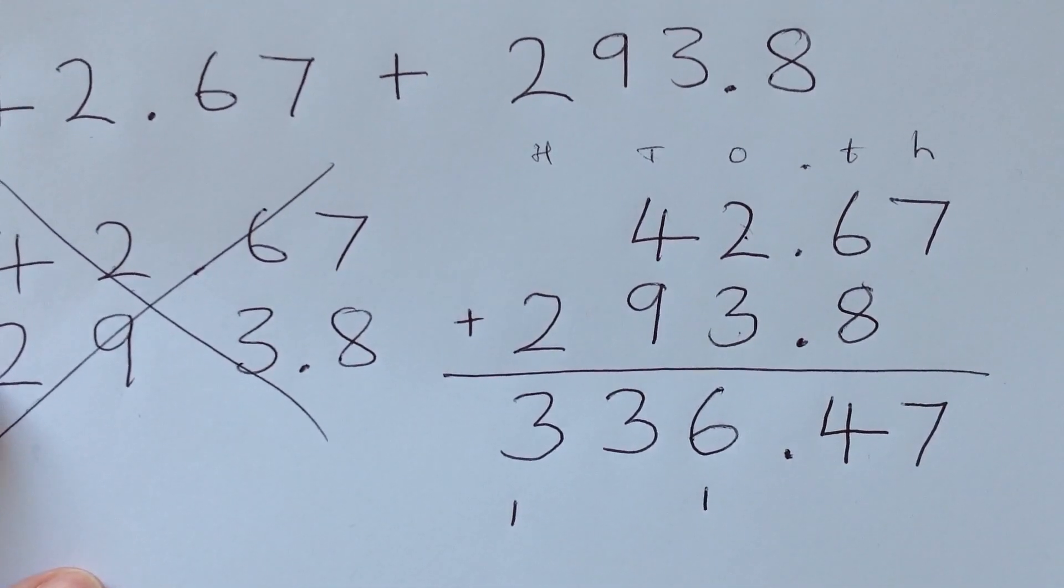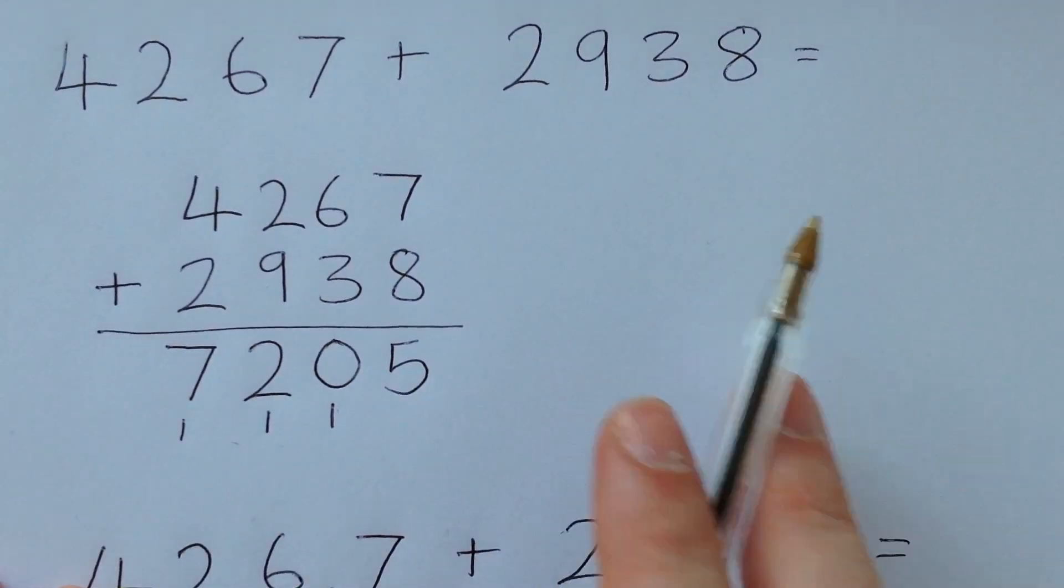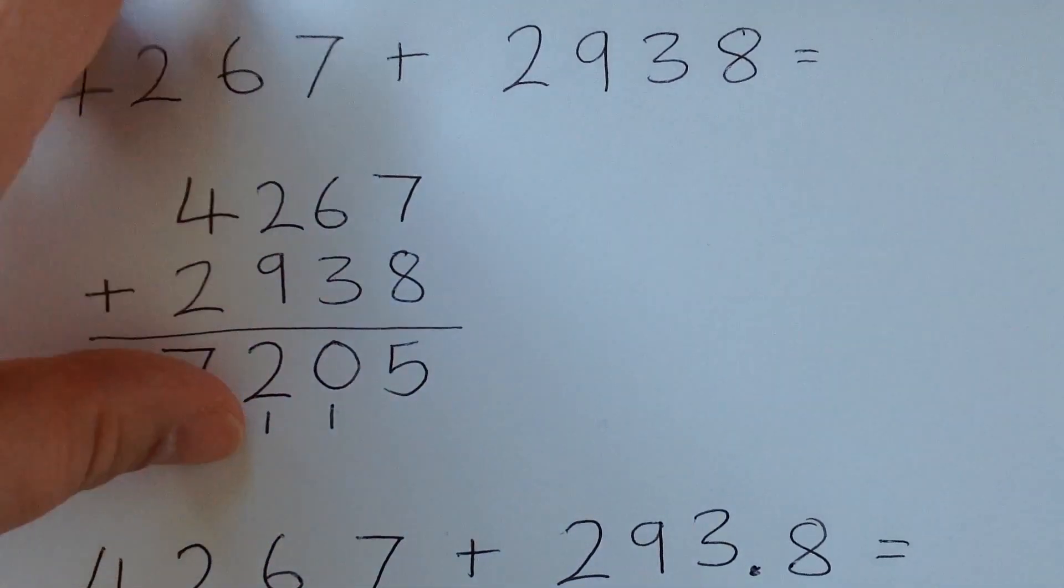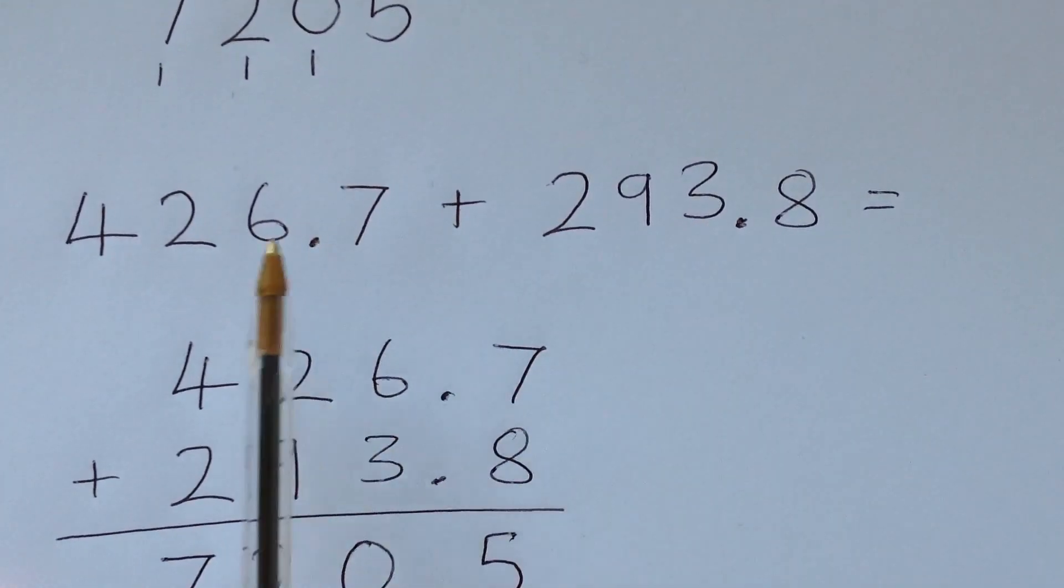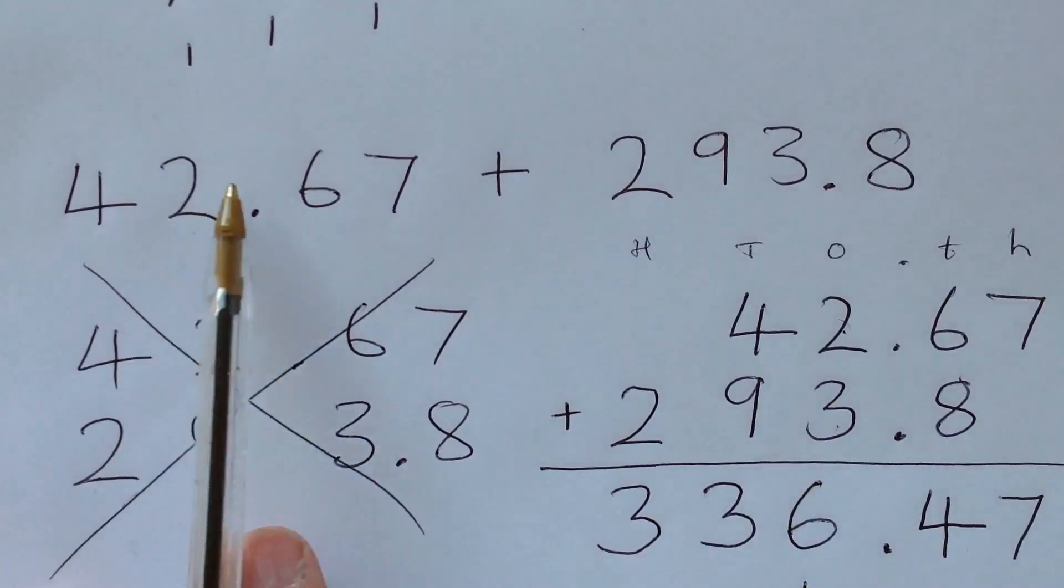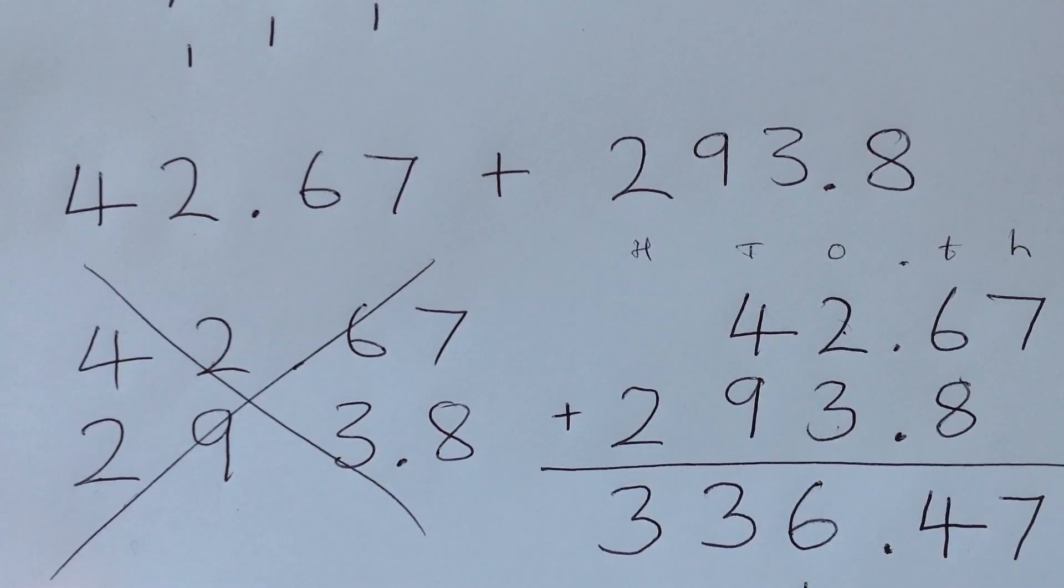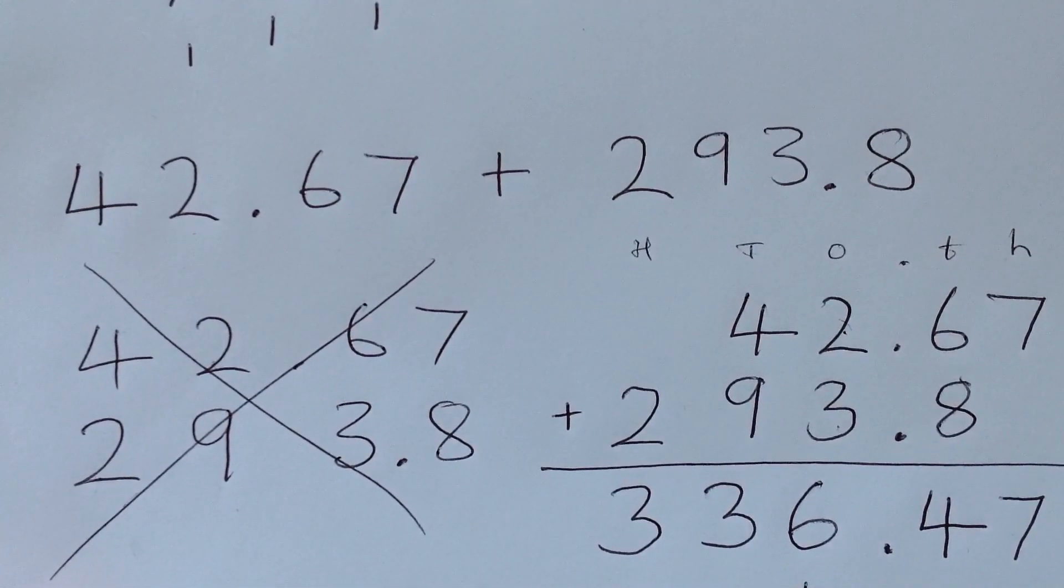So why not have a go at creating your own four-digit numbers, but then playing about with where you put the decimal point. You can start easy by having the decimal point in the same place on both numbers. And you can get harder by moving the decimal point on different numbers. Have a go. Show me and let me know. And as always, keep learning.